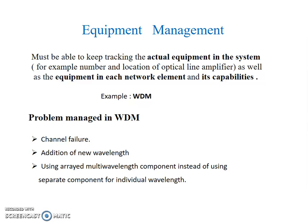Equipment management must be able to keep track of the actual equipment in the system. For example, the number and location of optical links as well as equipment in each network element and its capabilities — for example, wavelength division multiplexing (WDM).